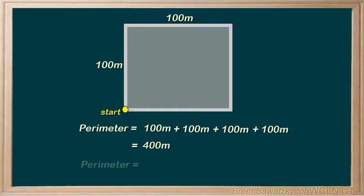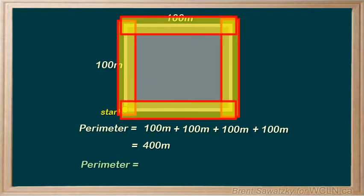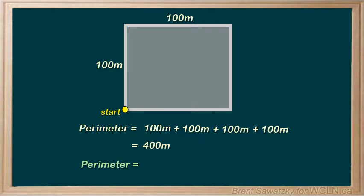And again, you could have been trickier. You could have said, hey, I just ran 100 meters four times to get back to my starting point. So we could have figured out the perimeter by saying four times 100 meters, which also gives us a total distance of 400 meters.